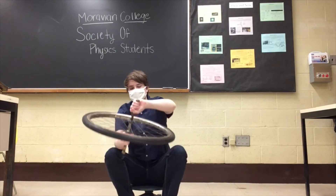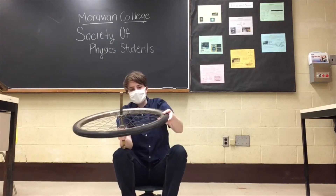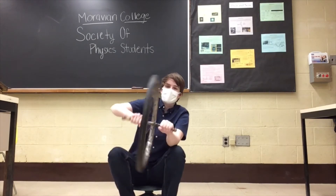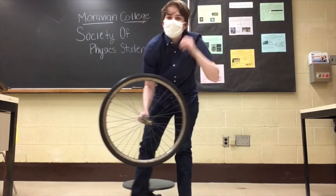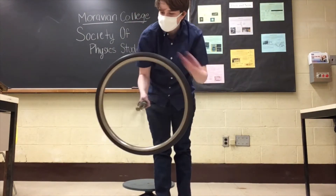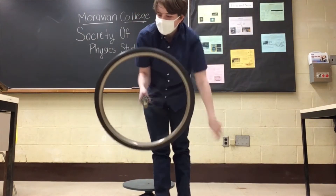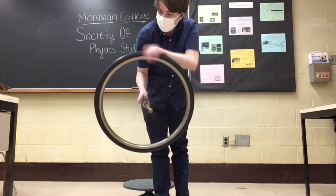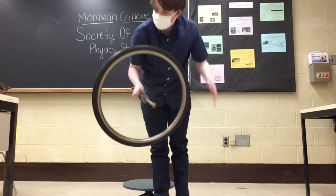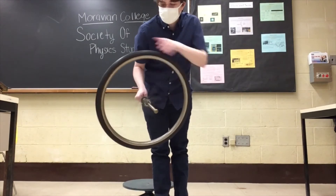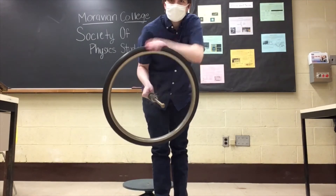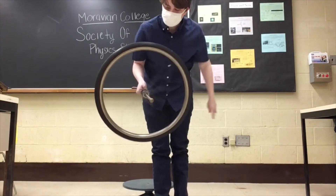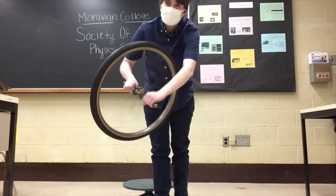As you can see, it's a standard bicycle tire and it's attached to these two rods so I can keep a good hold of it. Now what I'm going to do is I'm going to get this spinning. All this momentum, all this energy needs somewhere to go, and normally it would just come out through this spinning.